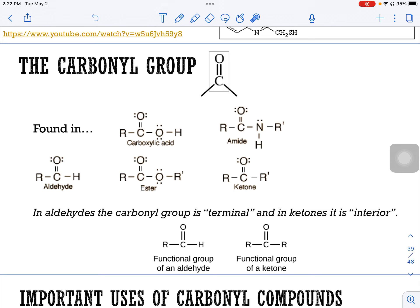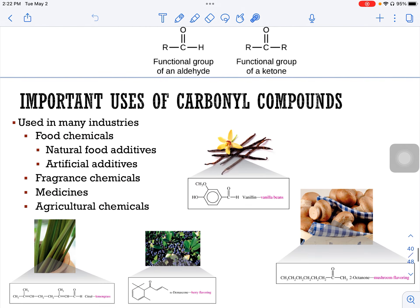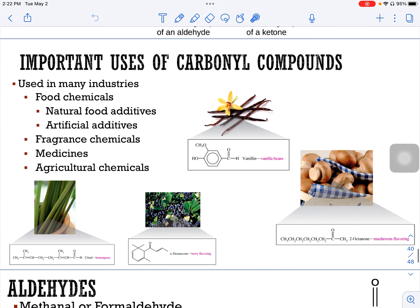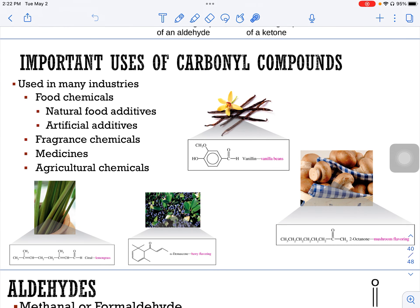In aldehydes, the carbonyl group is terminal, which means it's at the end. And in ketones, it is in the interior. So we'll look at that more specifically in a second. Carbonyl groups are found in many industries: food chemicals, natural, artificial, fragrance, medicines, and agricultural chemicals.